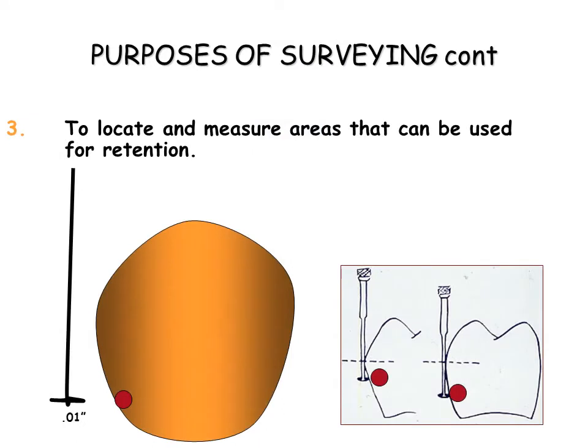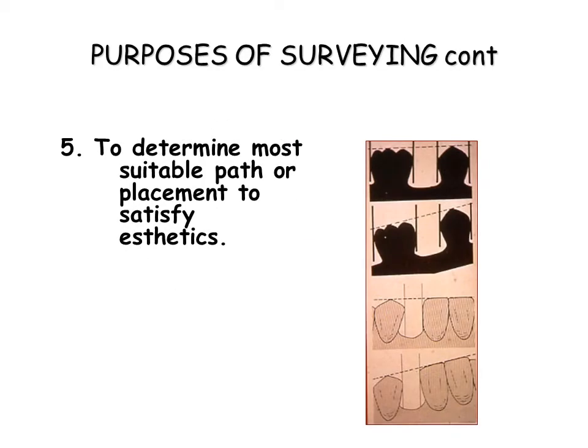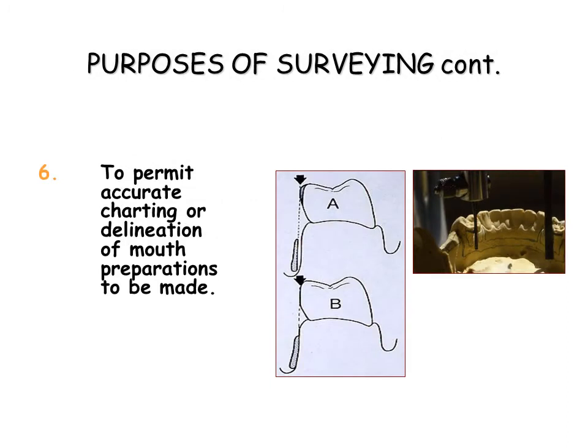18. To locate and measure areas of the teeth that may be used for retention. To determine whether or not tooth and bony areas of interference will need to be eliminated either by extraction or by selecting a different pathway. To determine the most suitable path of placement that will permit locating retainers and artificial teeth to the best aesthetic advantage. To permit an accurate charting of the mouth preparations to be made.